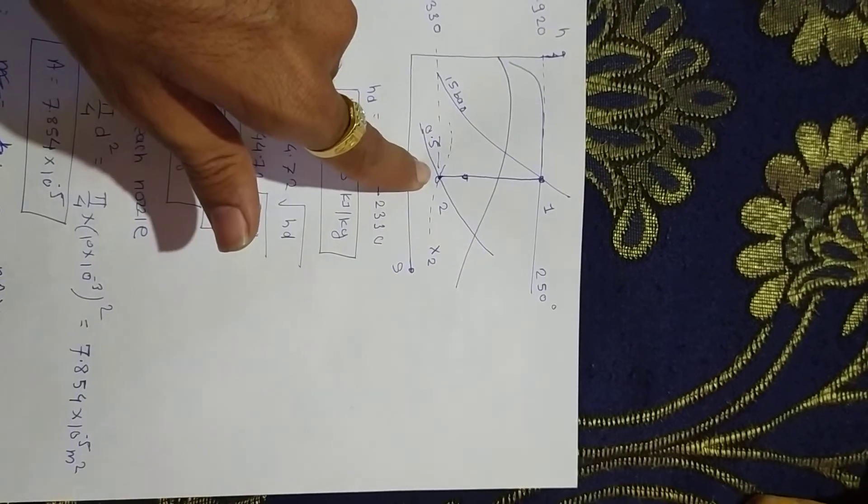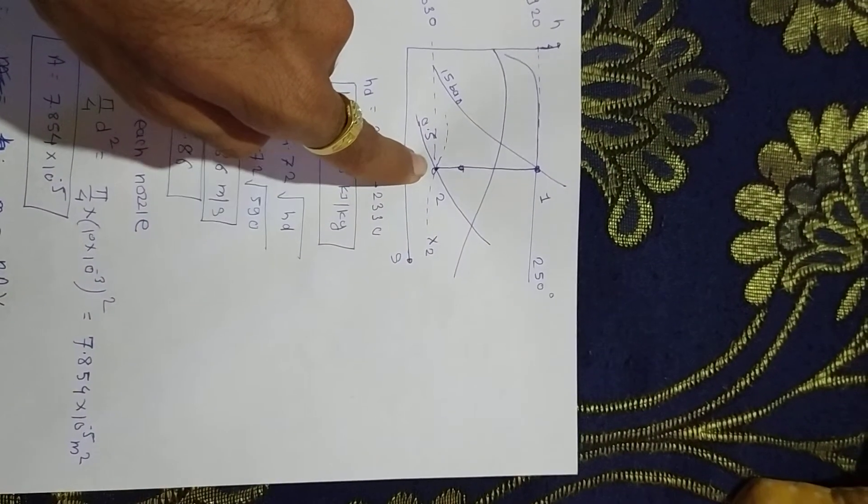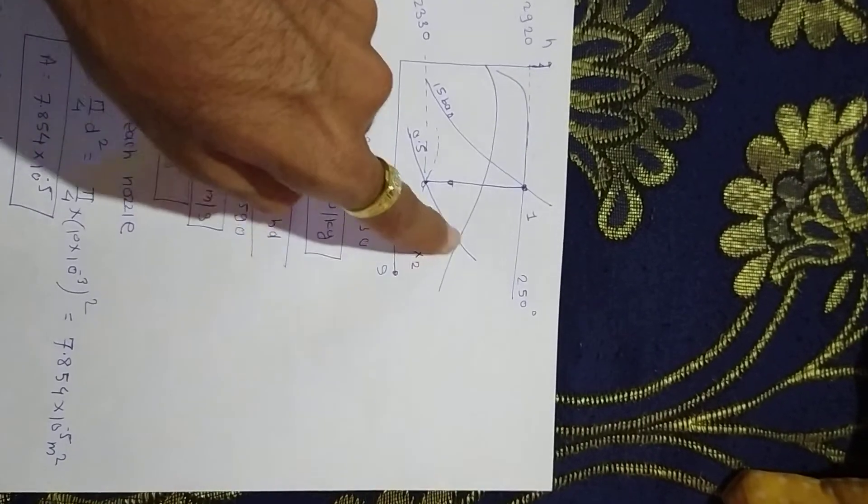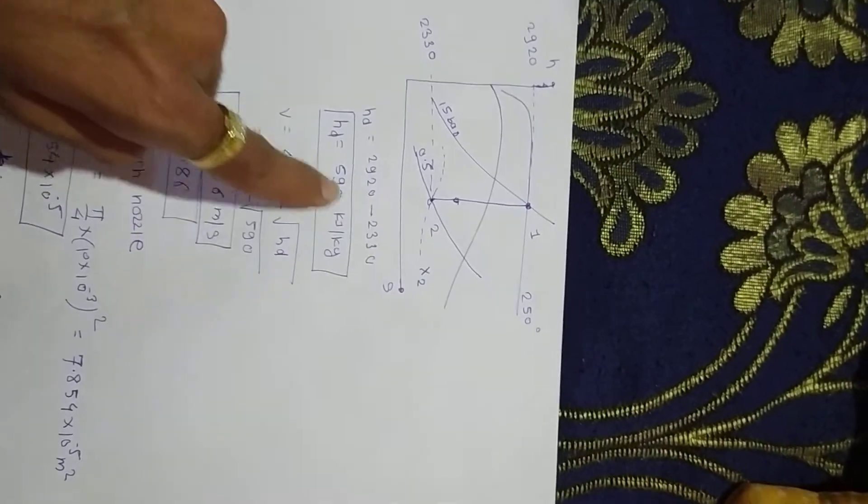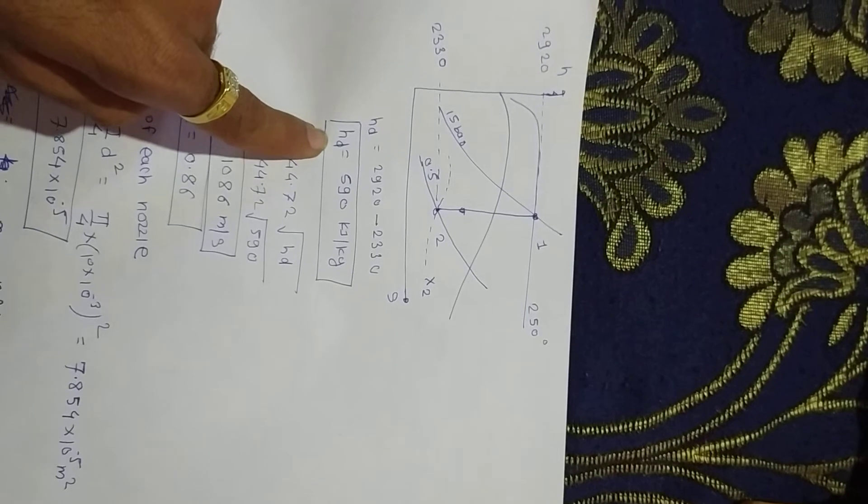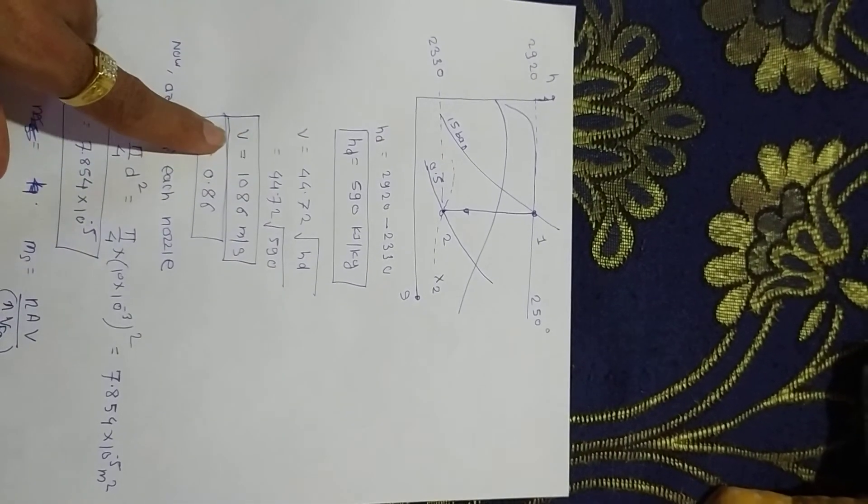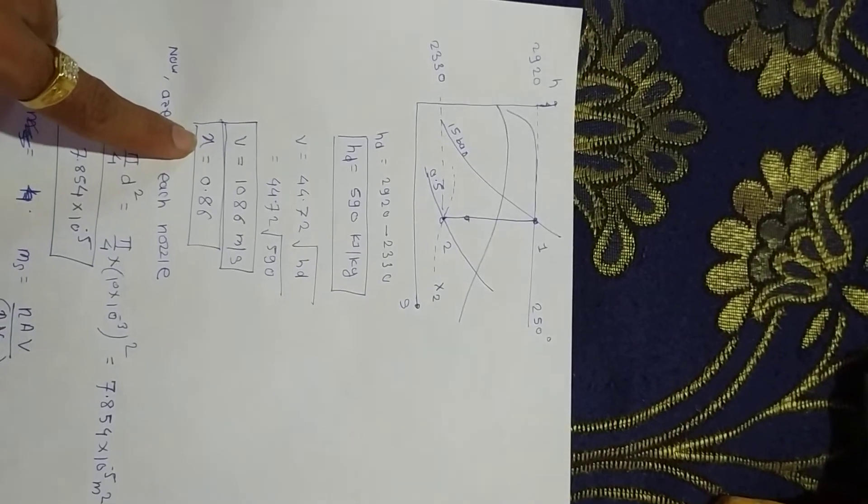Point 2 is around 2330 kilojoules per kg. Also take the final condition of steam. The value of X we need in the formula for calculating mass of steam. On the dryness fraction line, the value of X2 is calculated. Enthalpy drop is around 590 kilojoules per kg. Then calculate absolute velocity from the final condition of steam.